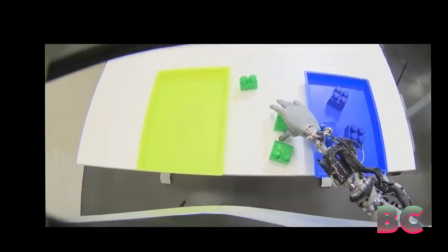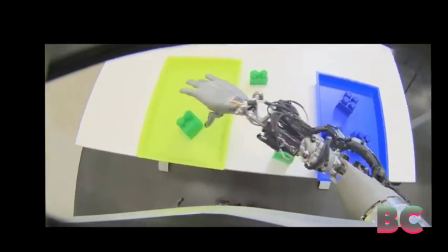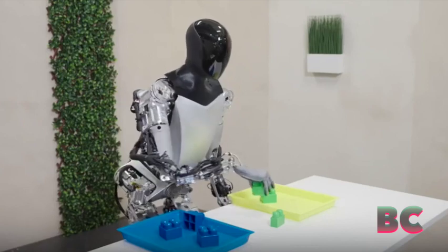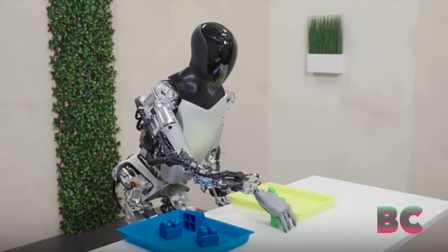Musk has made ambitious claims about ending poverty through the introduction of Tesla's humanoid robot, Optimus, the Daily Sun has reported.